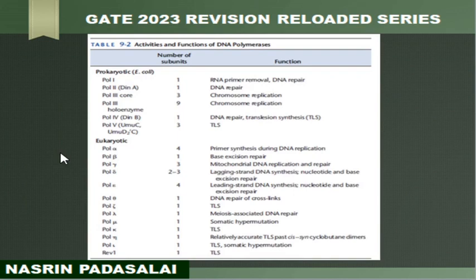Next we will be studying the activities and functions of DNA polymerases — first prokaryotic, then eukaryotic. In prokaryotes we can find 5 DNA polymerases. POL-1 is involved in RNA primer removal and DNA repair. POL-2 is involved in DNA repair. POL-3: both the core enzyme and the holoenzyme of POL-3 are involved in chromosomal replication.